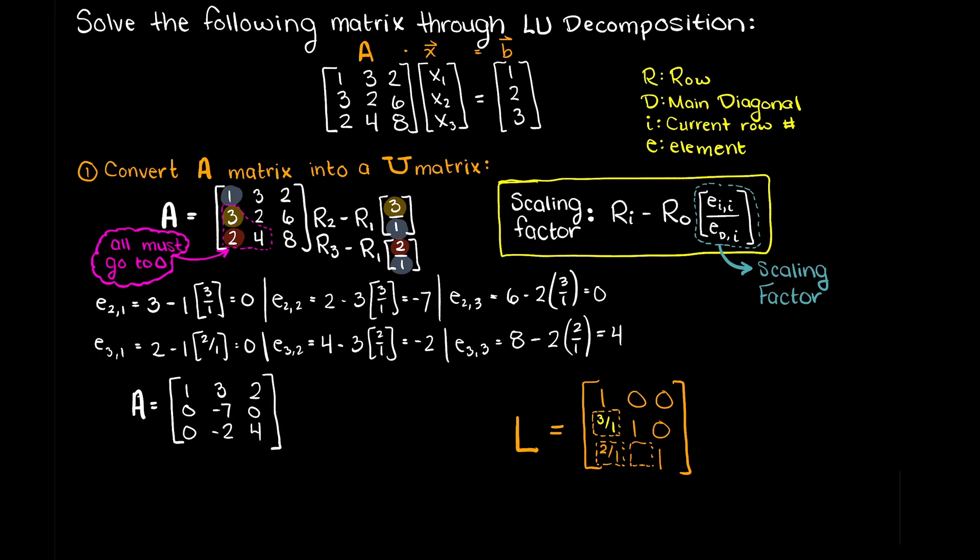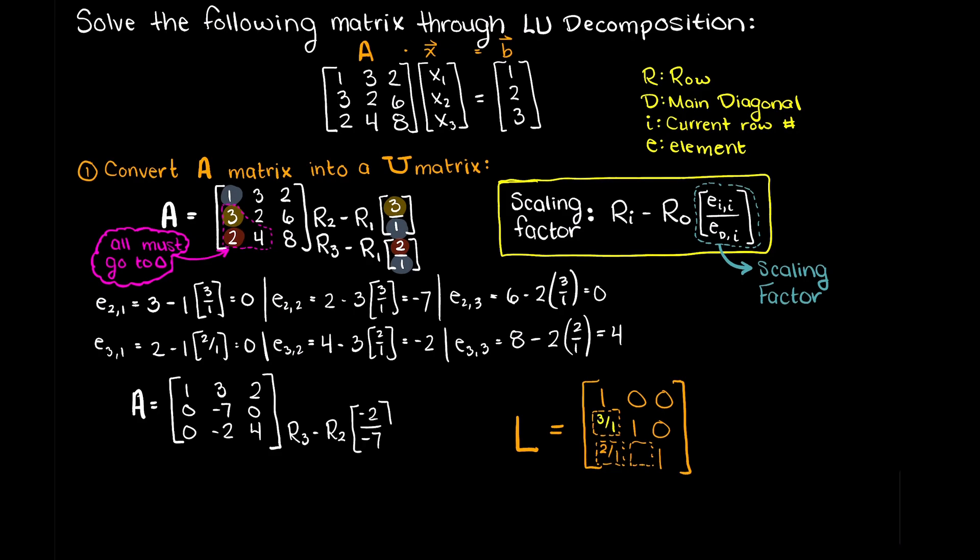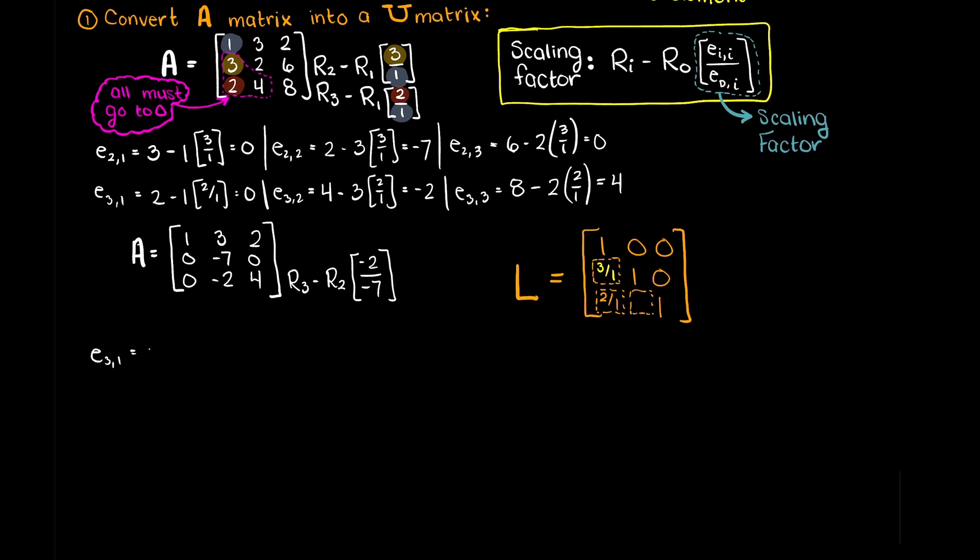Now, let's repeat the same process for our second column. As you can see there is only one row that we need to conduct row operations on. Therefore we have row 3 minus row 2 times our scaling factor of minus 2 over minus 7. And again, just go ahead and complete these calculations here.